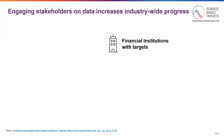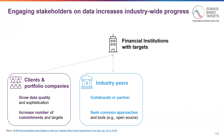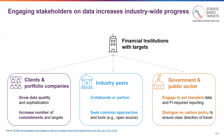It's important for financial institutions to engage stakeholders and act to increase data quality. Looking at clients and portfolio companies, financial institutions can ask them to grow their data quality and sophistication through existing touch points, and also increase the number of commitments and science-based targets within their portfolios. Across industry peers, financial institutions can look to collaborate or partner using open-source tools or sharing methodologies with peers, seeking common approaches and tools as well. On the government and public sector side, financial institutions can engage with policymakers to set standard data and reporting requirements — as already exists in the financial world — and to dialogue on carbon policy to ensure a clear direction of travel in a given region or country.